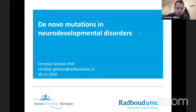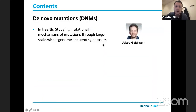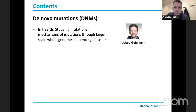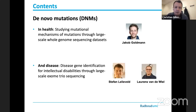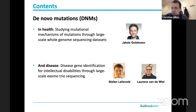Today I'll talk about novel mutations in neurodevelopmental disorders. We've been very interested in de novo mutations already for several years. We've studied them, and one thing I wanted to mention is that we've actually also studied them in healthy individuals — work done by a German PhD student, Jacob Goldman — with some very interesting findings, but today I'll not talk about that. I'll talk about the work we've done on using de novo mutations to identify disease genes for neurodevelopmental disorders, specifically intellectual disability, using large-scale exome and sequencing data.